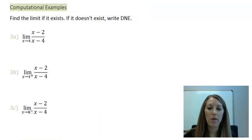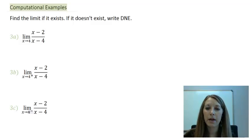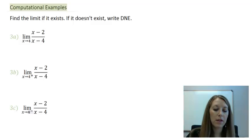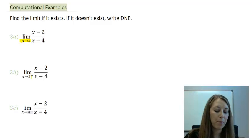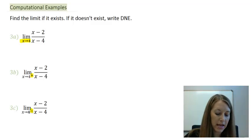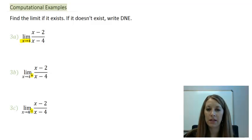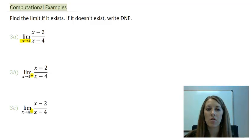This problem has three different parts, but it's the same function all the way through: x minus 2 over x minus 4. The only difference in the three parts is in A, we're looking as x approaches 4; in B, as x approaches 4 from the right-hand side; and in C, as x approaches 4 from the left-hand side. I suggest you pause the video to see if you can figure out all three answers on your own.